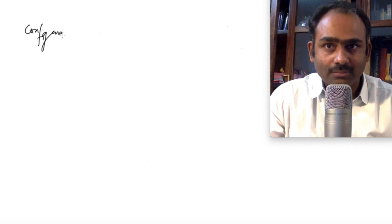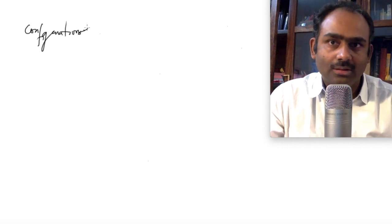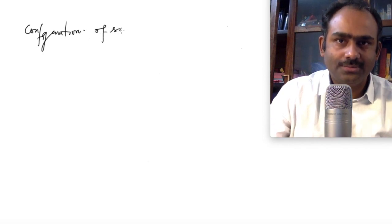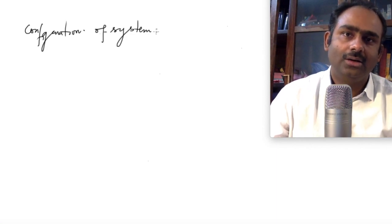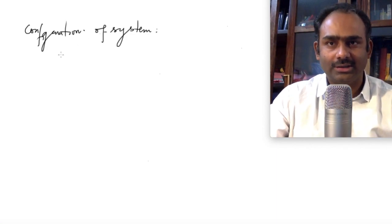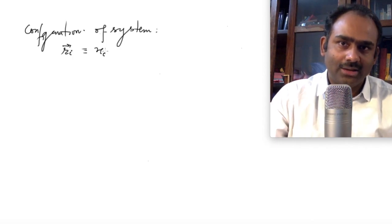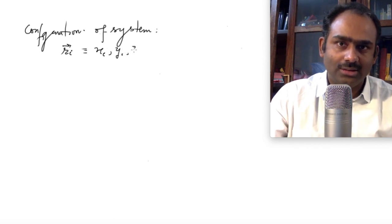Till now we have used Cartesian coordinates. So if I am specifying the configuration of the system, I was using the coordinates Ri, and by this Ri I mean Xi, Yi, and Zi.